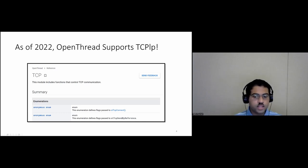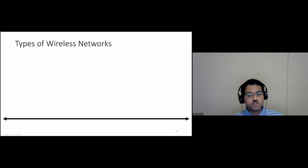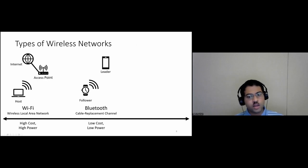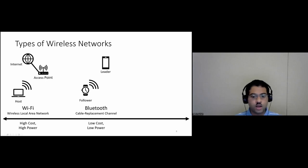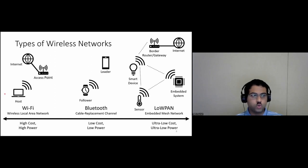Let me take a step back and talk about what LOWPANs are. Wi-Fi provides internet connectivity via an access point. Bluetooth is lower cost and lower power than Wi-Fi but doesn't provide true internet connectivity — it's more of a cable replacement or wireless USB. In contrast, LOWPAN aims to provide connectivity like Wi-Fi to embedded devices and operates at an even more extreme cost and power point compared to Bluetooth.